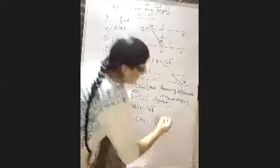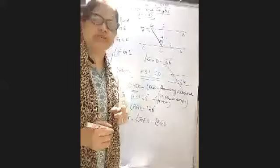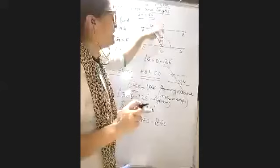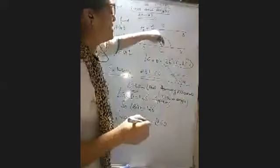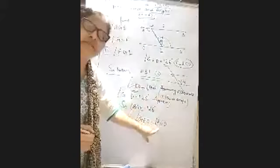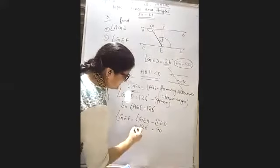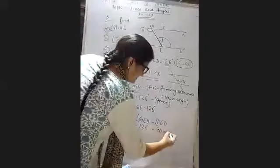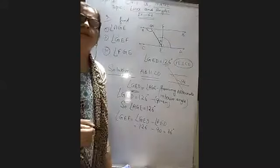We will subtract FED from GED. Because FED is 90 degrees. Why is it 90? Because FE is perpendicular to CD — this was given. So angle FED is 90 degrees. And GED is 126 degrees — this was given. So we subtract: 126 minus 90 equals 36 degrees. So your second angle GEF is also found.